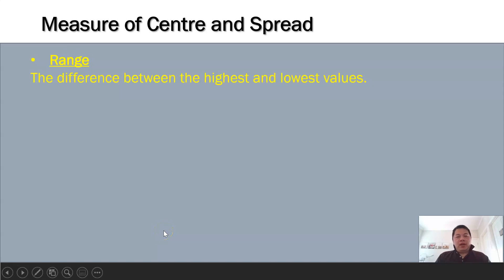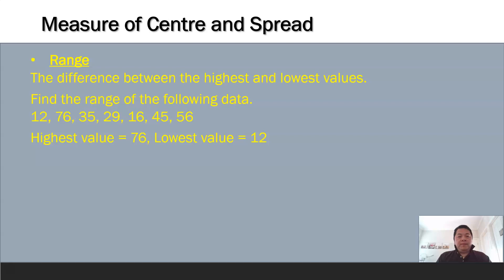Range is quite an easy concept to understand. We just need to find the difference, so you subtract the highest value and the lowest value. For this case, the highest is 76, the lowest is 12, so the range is 64.